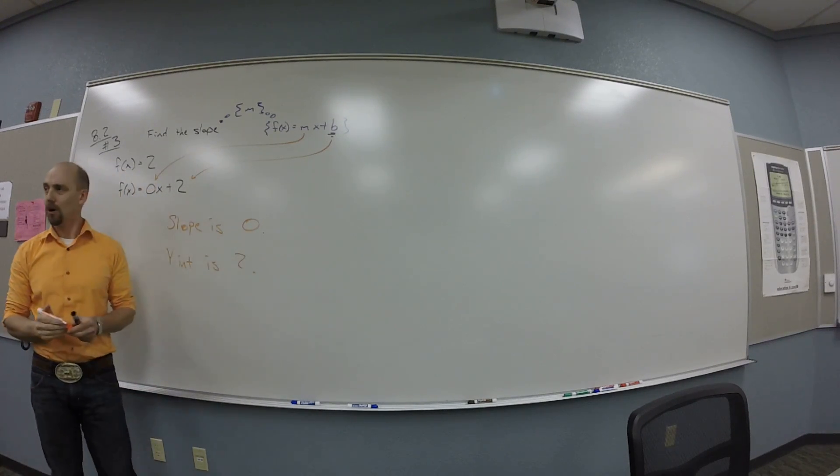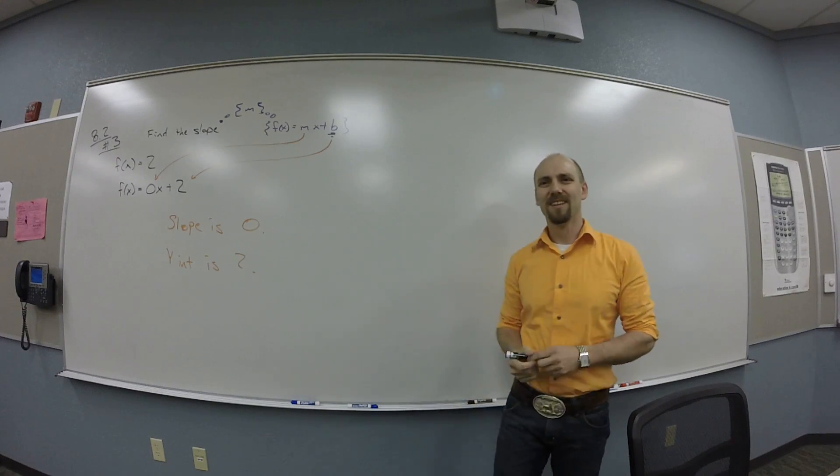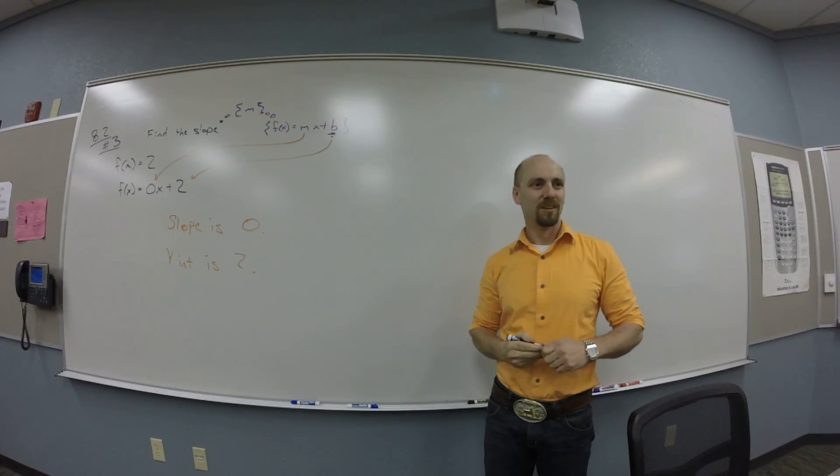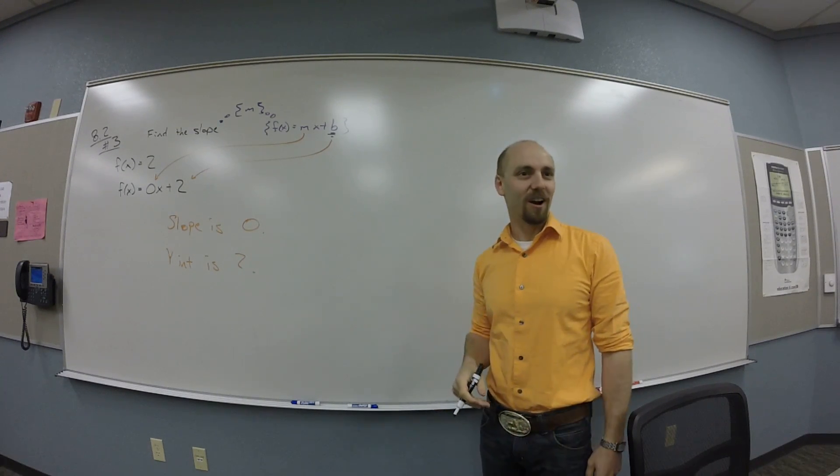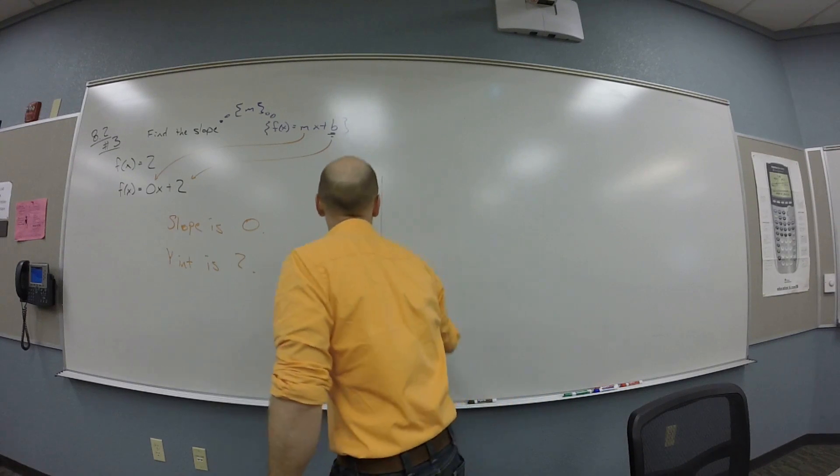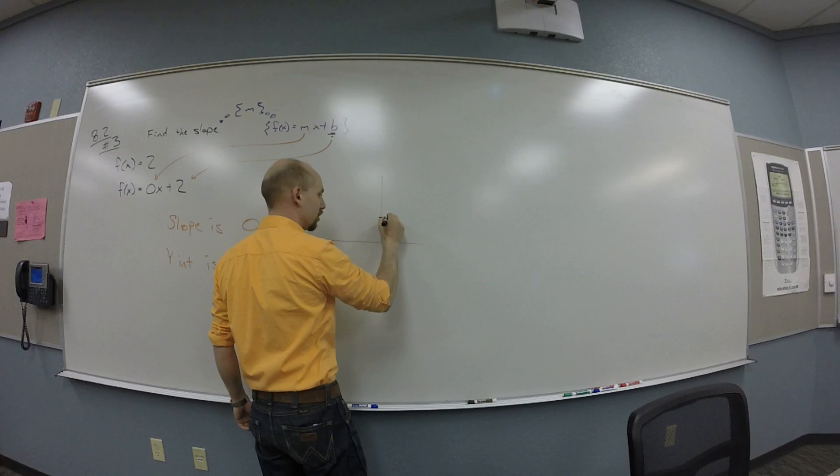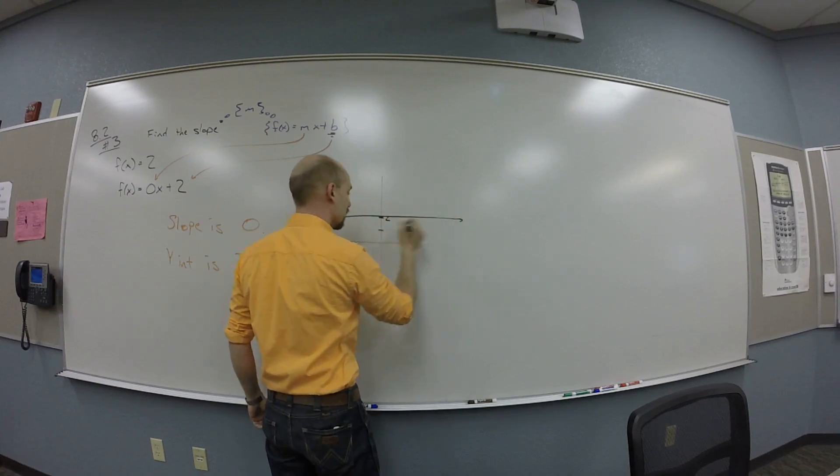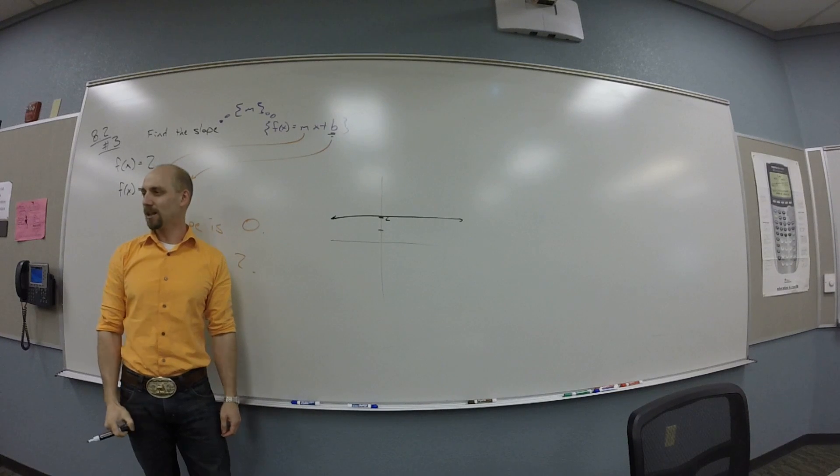What does it mean for the slope to be 0? This is actually an important thing. It's horizontal. Yeah, it's horizontal. You guys, that doesn't seem interesting, right? No. At all. Like, it's a horizontal line at 2. So 1, 2, and then my line looks like this, right? You guys want to know why this is interesting?